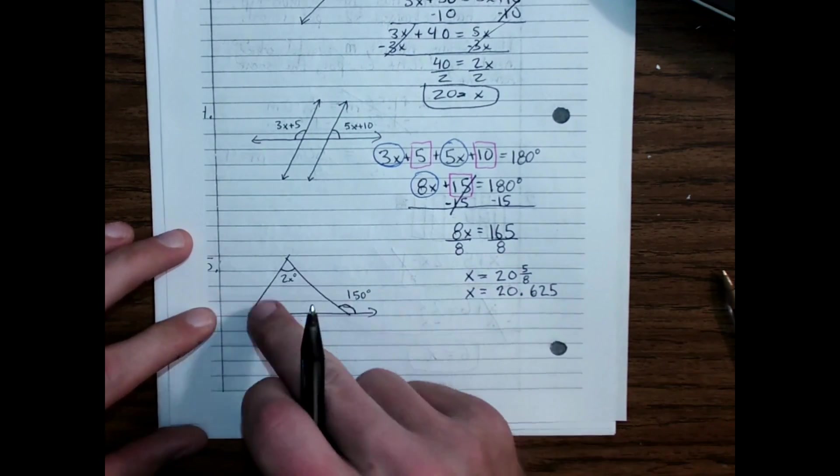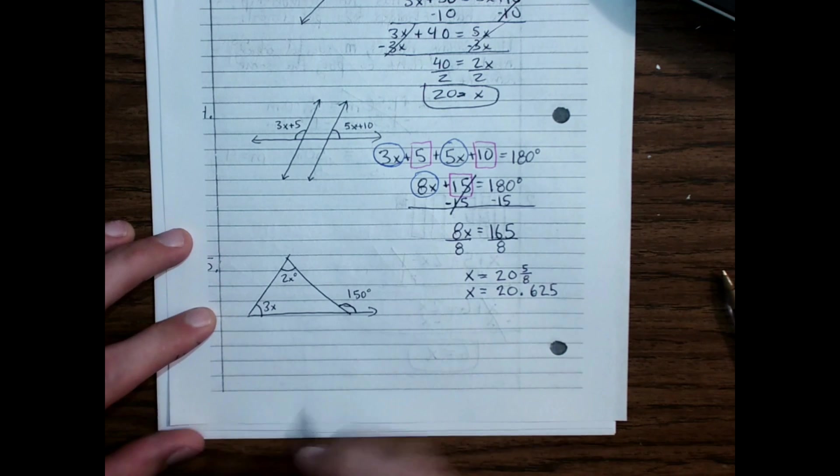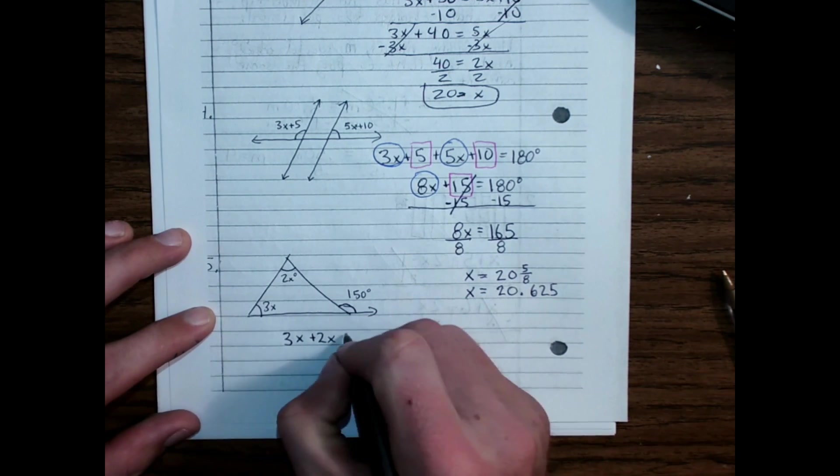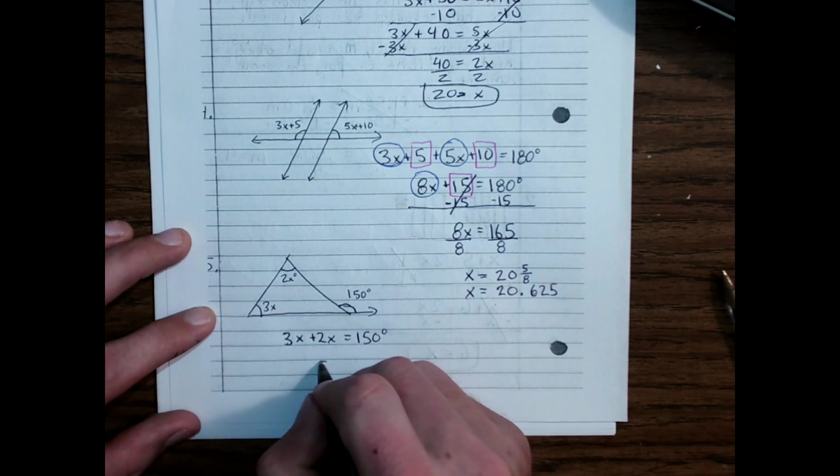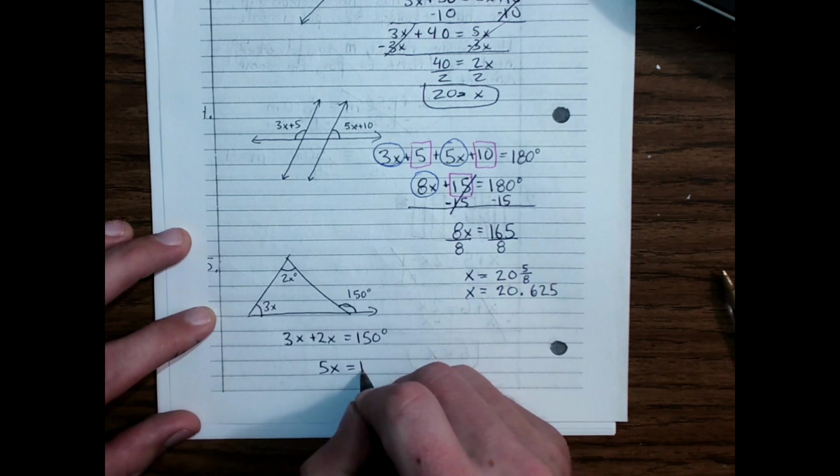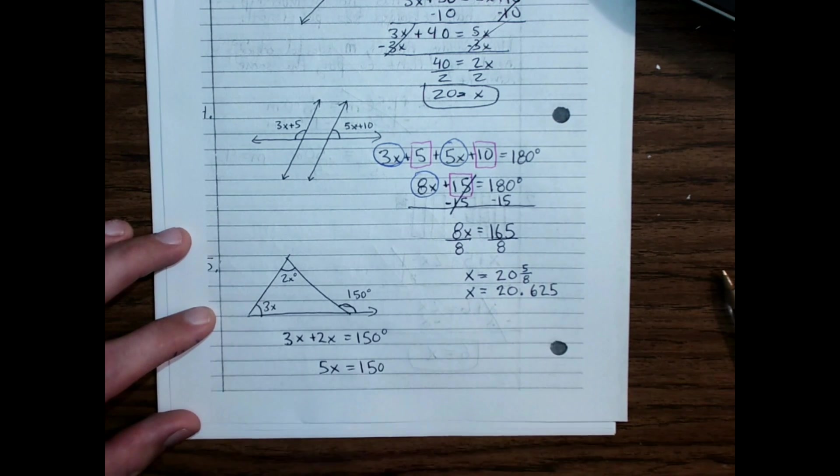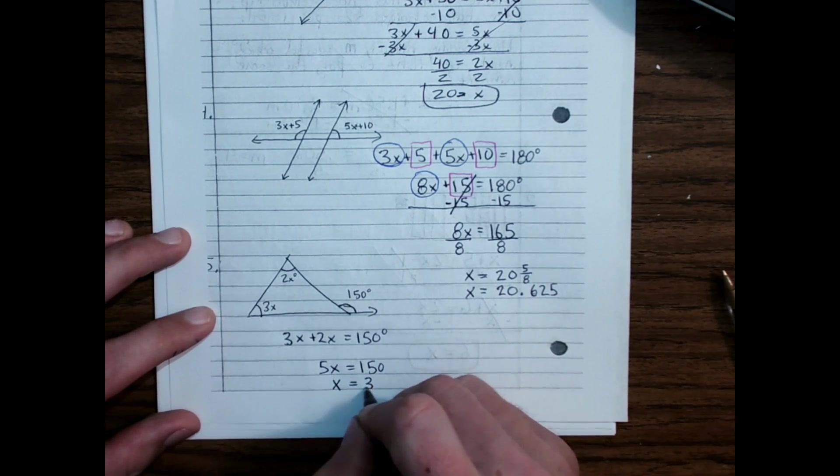And again, these two angles will add together to equal this one. So 3X plus 2X equals 150 degrees. 3X plus 2X is 5X, which equals 150. Divide both sides by 5. X is equal to 30.